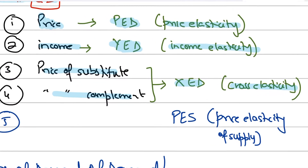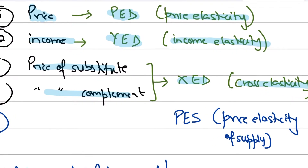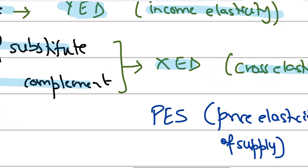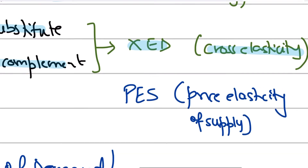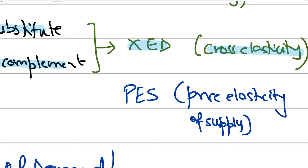If that change is in quantity supplied, then it becomes price elasticity of supply. I have written quantity supplied here as well, but primarily I am right now focusing on quantity demanded.